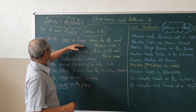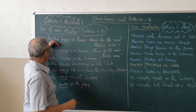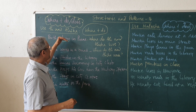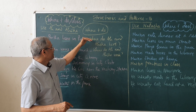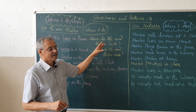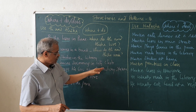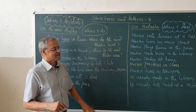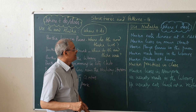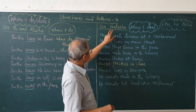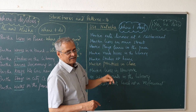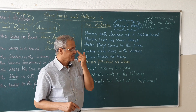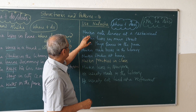So when a single subject — third person — comes, we use 'does'. When it becomes plural, we use 'do'. This is one pattern. Now we will come to the next pattern, using a singular subject only — Natasha. First we will read this.